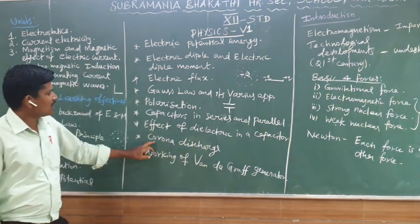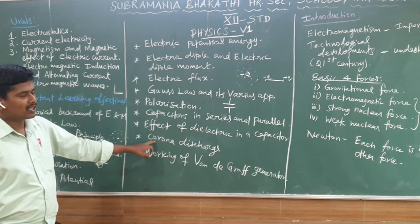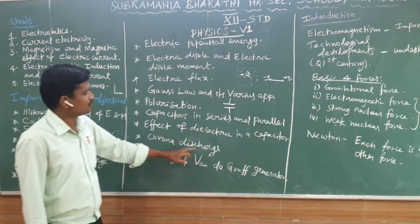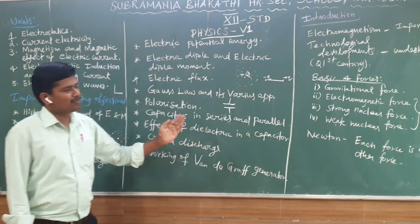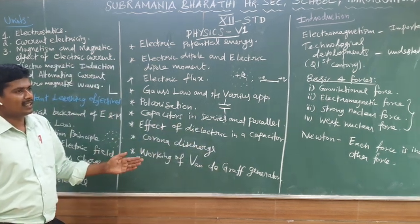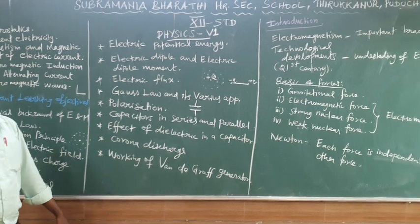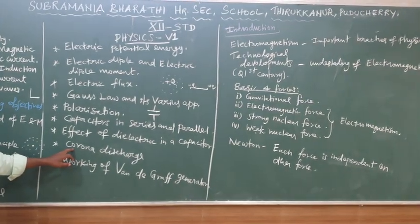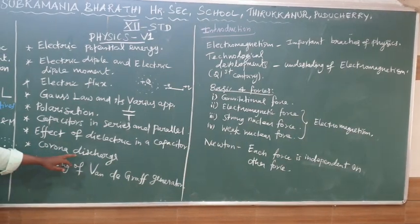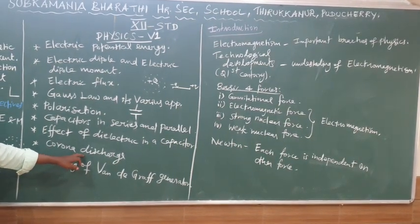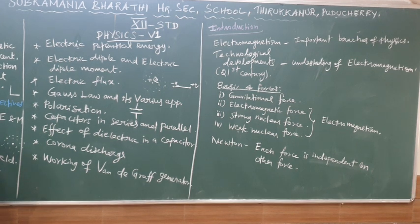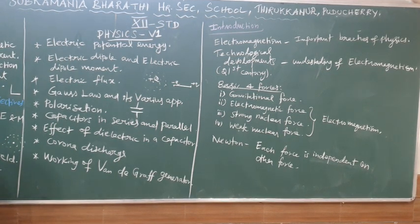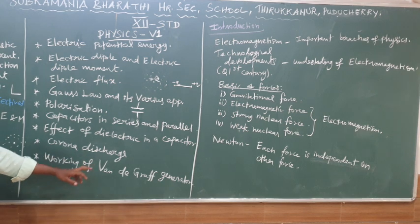Next is Corona Discharge. What is Corona Discharge? When there are sharp points on a conductor, charge leaks from these sharp points. Ordinary conductors leak charge through sharp points. This process is called Corona Discharge.